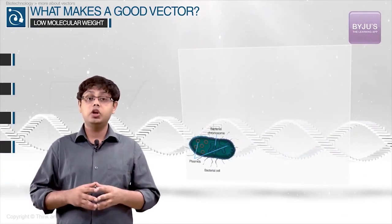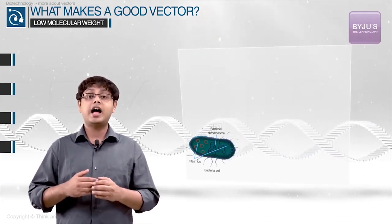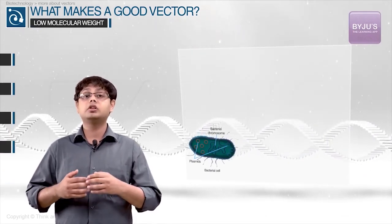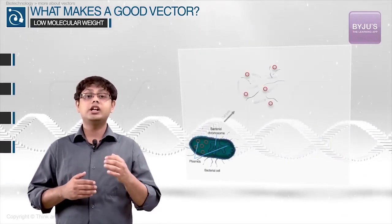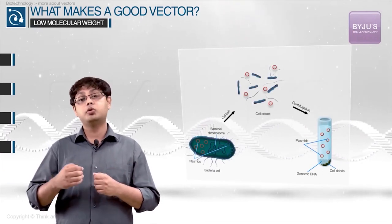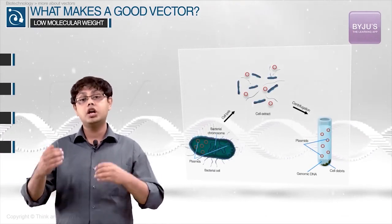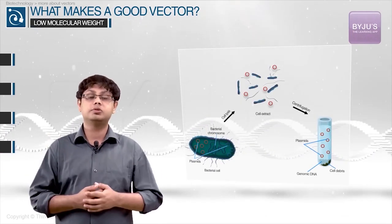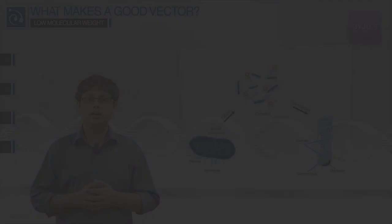And finally, there is size. The cloning vector should have low molecular weight so that it can be easily separated from the chromosomal DNA of the host bacteria.